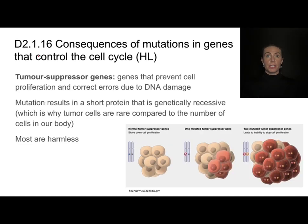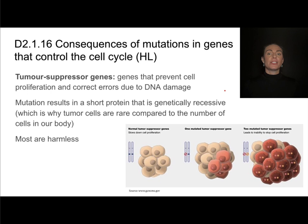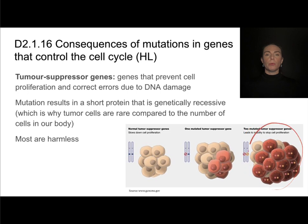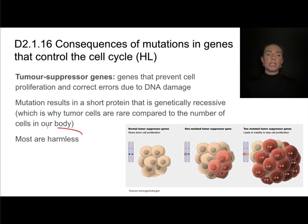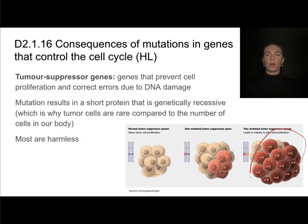In addition to proto-oncogenes, tumor suppressor genes are also genes that can prevent cell proliferation and correct errors due to DNA damage — so they are very important. If a mutation occurs in a tumor suppressor gene, it is generally genetically recessive, so you would need two copies of that recessive mutated tumor suppressor gene in order to grow a tumor. This is why the number of tumor cells is relatively rare compared to the number of normal cells in our body. Most of these tumors are harmless — referred to as benign — so just because they're there doesn't necessarily mean they are causing problems, but they are the result of mutations in those tumor suppressor genes.